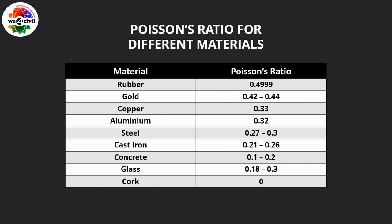Concrete has a Poisson's ratio of 0.1 to 0.2, though some books list 0.25. Glass is approximately 0.1 to 0.3, and cork has a Poisson's ratio of 0.